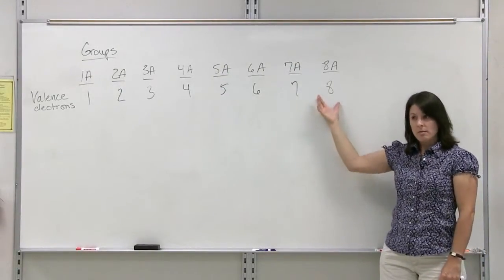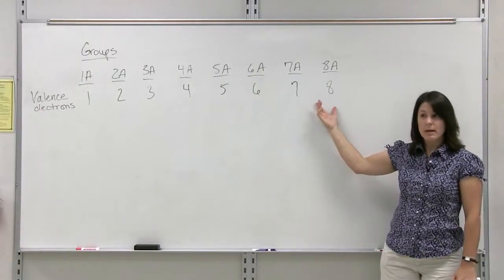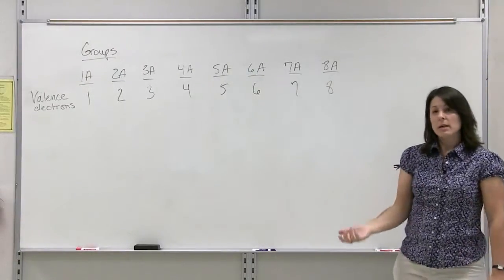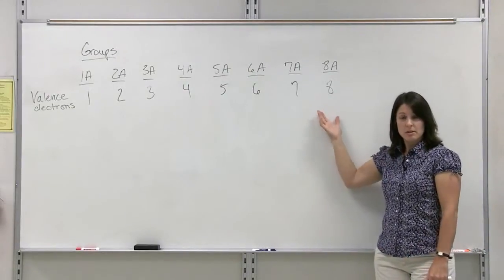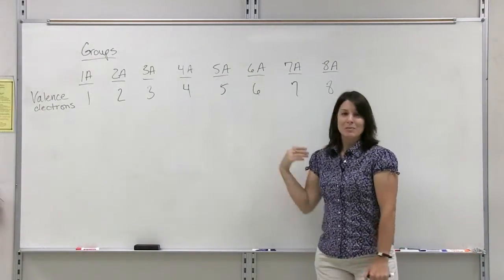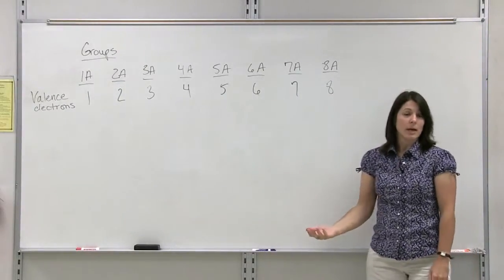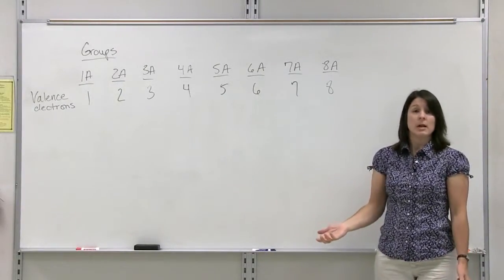So the noble gases, which is the common name for the group 8A elements, have a full set of valence electrons. This is the most stable electron configuration, to have a full set. All of the other elements want to be like a noble gas and want to achieve an octet.